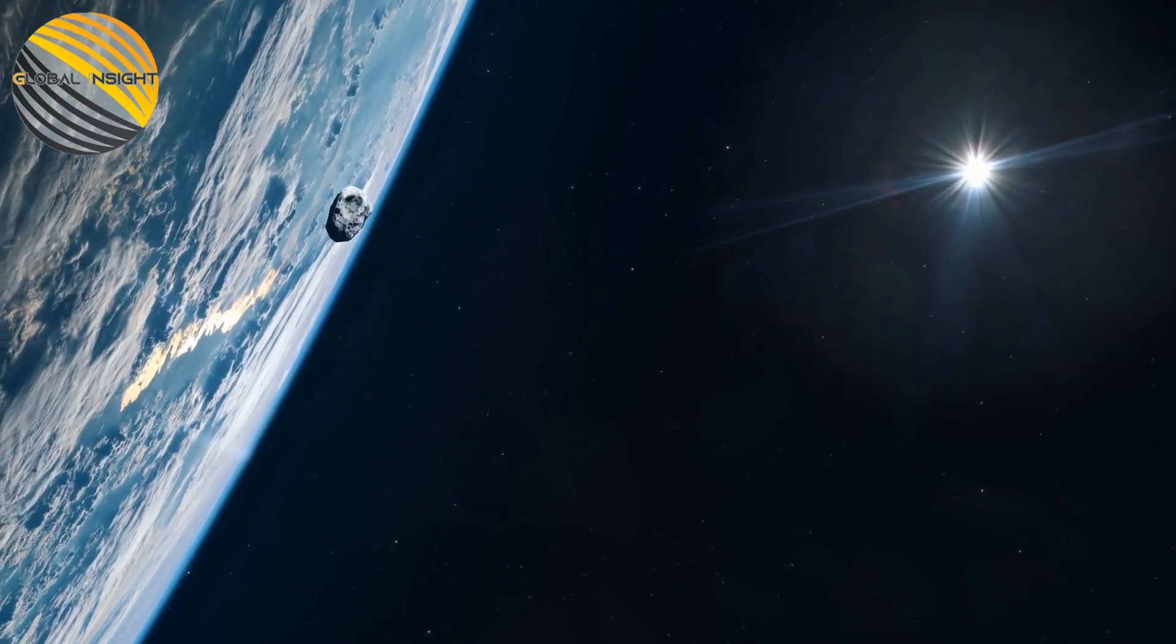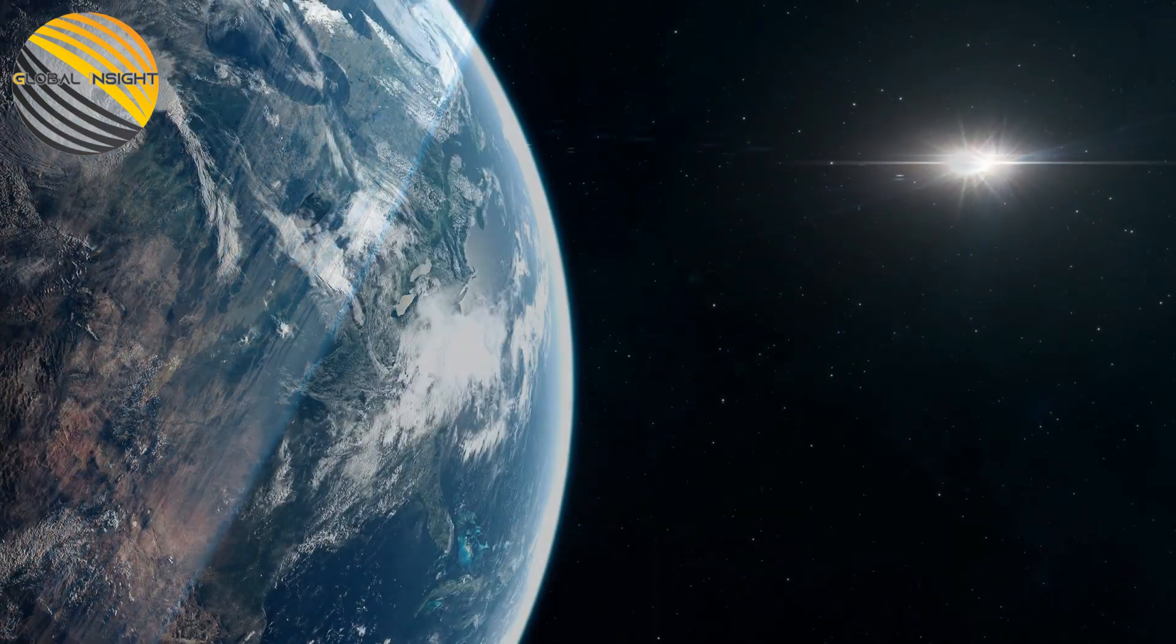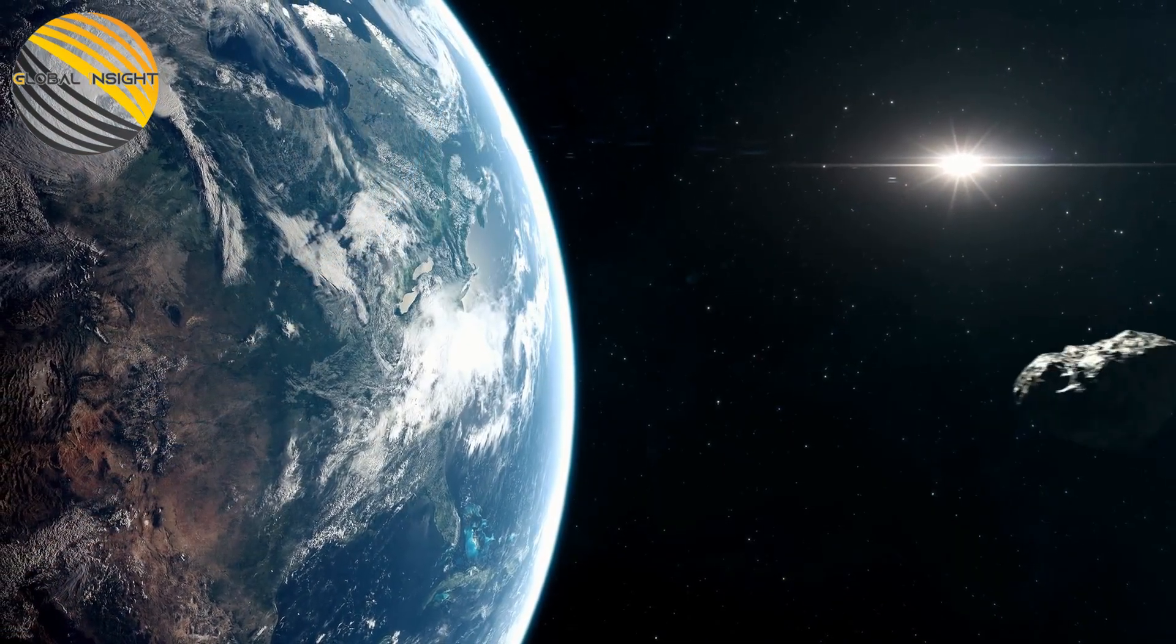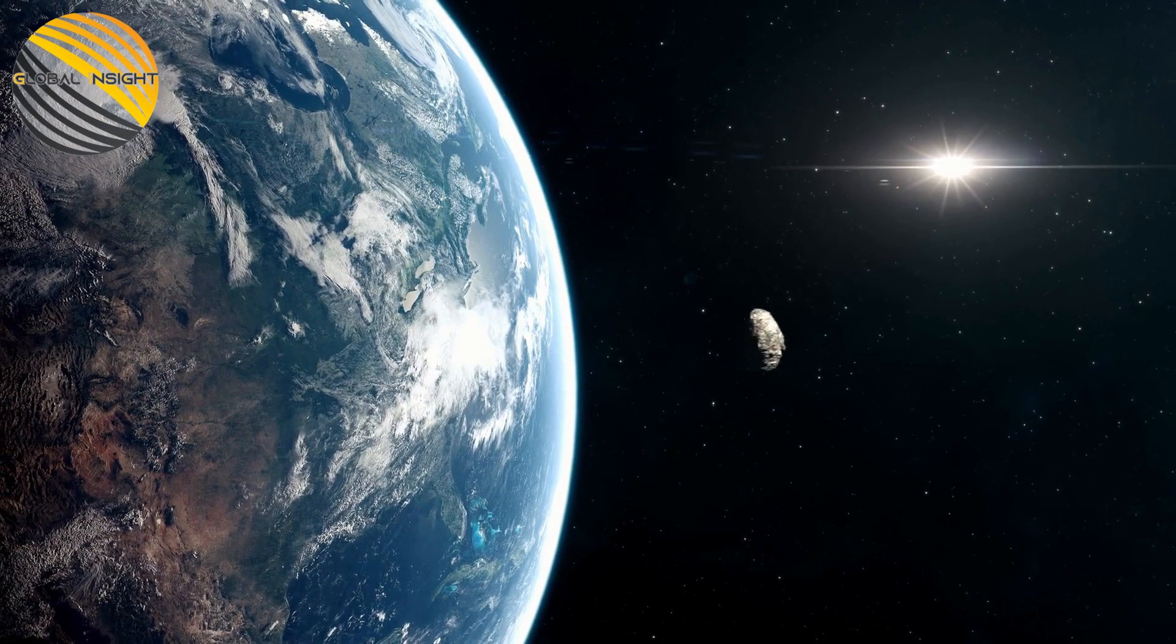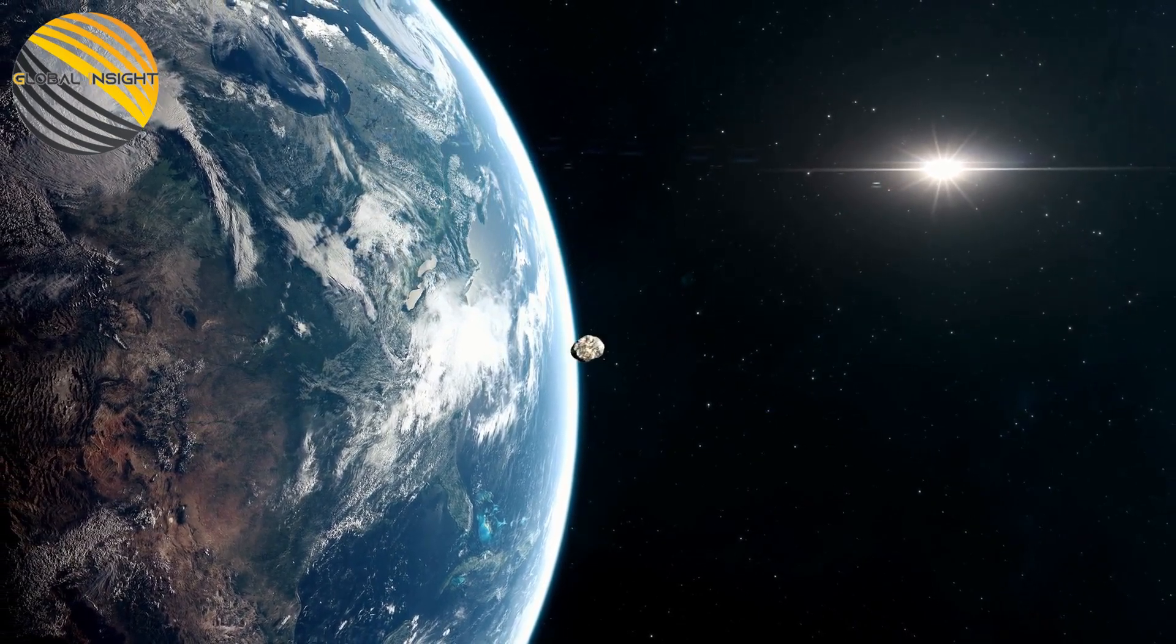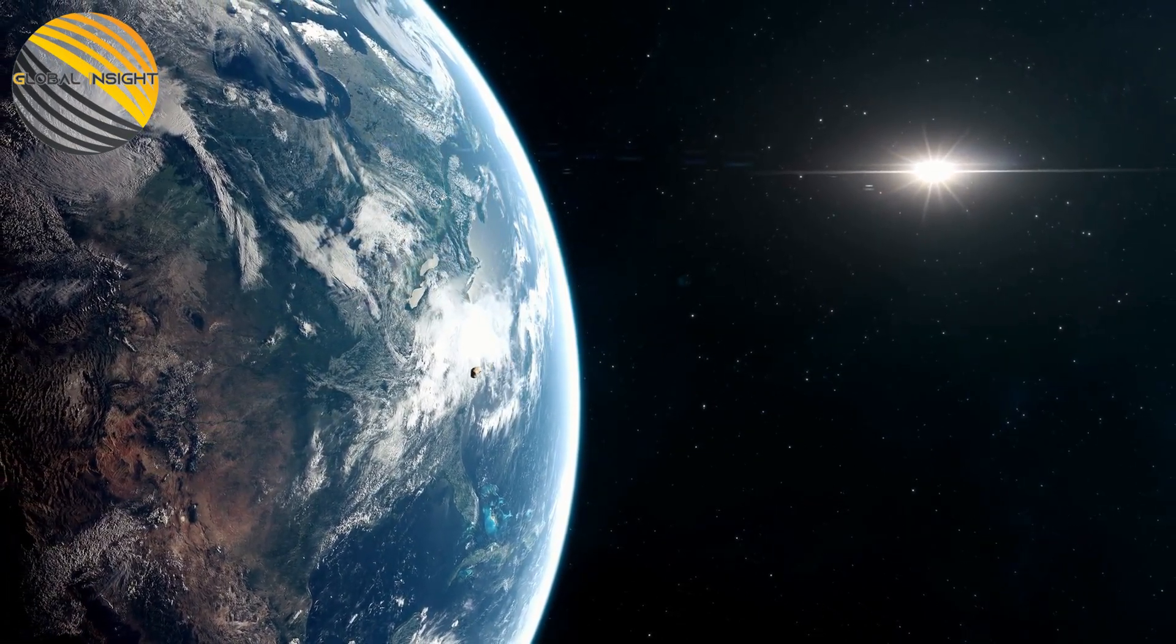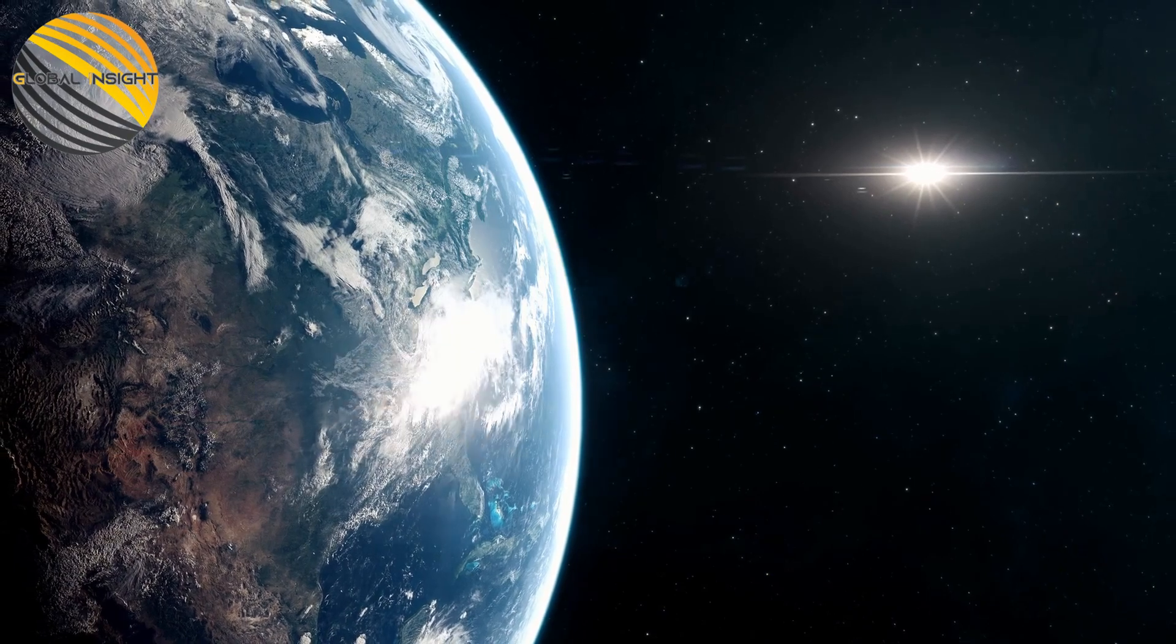The trajectories of all near-Earth objects up to the end of the century have been estimated by NASA. According to NASA, the good news is that there is no known threat to Earth from an apocalyptic asteroid collision for at least the next 100 years.